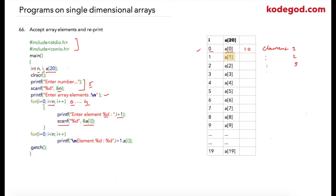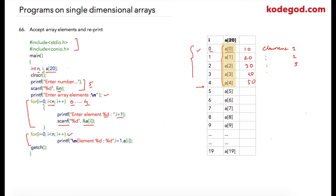The value will be stored at address location of a[1], so 20 will be stored. Similarly, our loop executes till 4, so suppose the user has entered 30, 40, and 50 in the subsequent iterations. After that, this loop will be completed and then we write the same loop again to print these values. Using the for loop starting from 0 till 4, inside the loop there is a single printf statement: 'element %d: %d', where 'i plus 1' is replaced for the first %d.